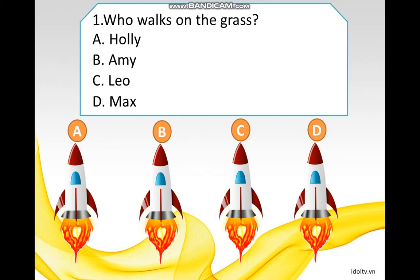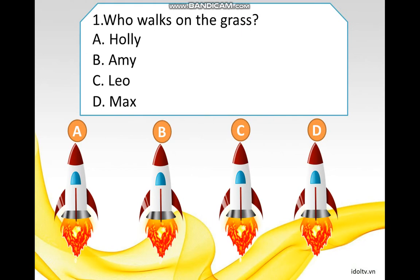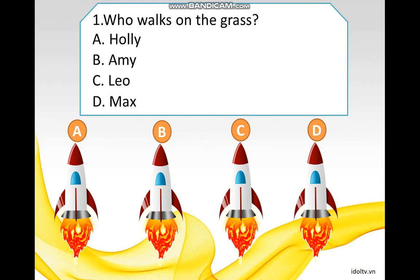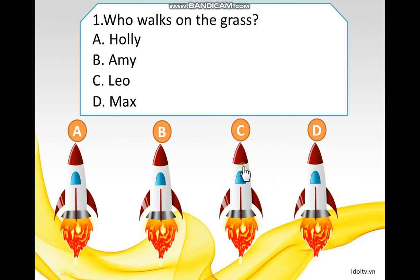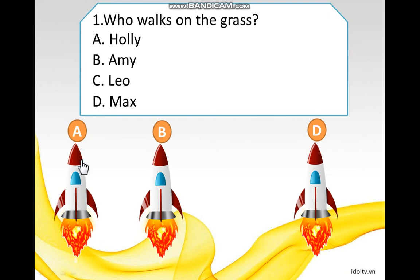Okay, number one: who works on the right? A) Holly, B) Amy, C) Leo, D) Matt. Do you remember in Lesson 1 who works on the right? The answer is Holly. Are you sure? Let's check the answer.